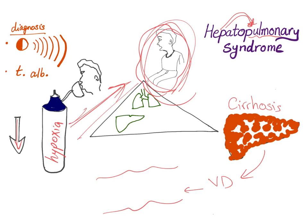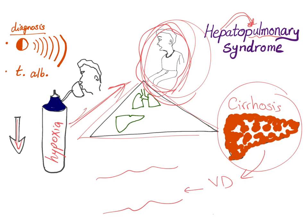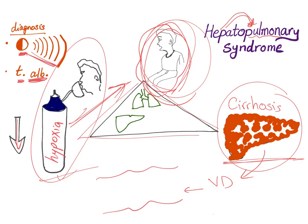This is the triad of hepatopulmonary syndrome: cirrhosis, platypnea-orthodeoxia, and hypoxia. To diagnose hepatopulmonary syndrome, you use contrast echocardiography and technetium albumin scanning. In summary: cirrhosis, hypoxia, and platypnea, diagnosed with contrast echo and technetium albumin.